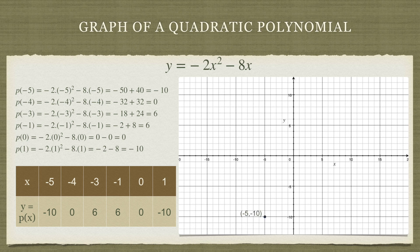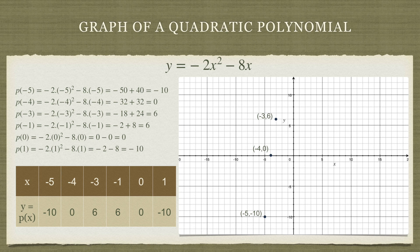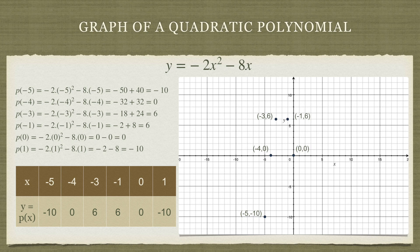Our first point is here, minus 5, minus 10. Second point is minus 4, 0. Third point is minus 3, 6. Fourth point is minus 1, 6. Then we have 0, 0. And then we have 1, minus 10.